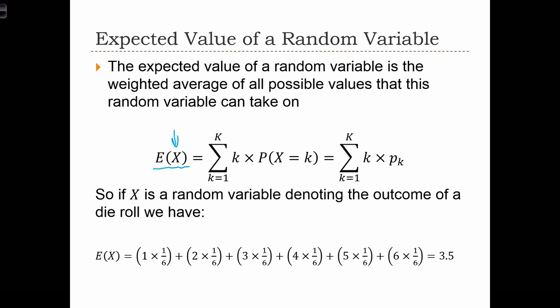In the general case, the expected value is the sum over all possible outcomes K. So K is a possible value of the variable X, and we're going to multiply K by the probability that the random variable equals K. And for each of these K outcomes, we're going to calculate K times the probability that X equals K, and we're going to add them all up in this summation from K equals 1, the first possible outcome, to capital K, the last possible outcome.